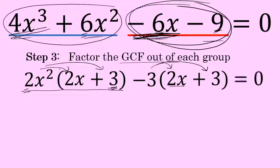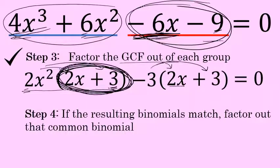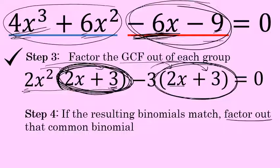Once we've set this equal to 0 and factored the greatest common factor out of each group, we're done with step 3. On to step 4, which is to see if the resulting binomials match. After you factor a common factor out of each group, take a look at the two binomials. The first one is 2x plus 3, and the second one is also 2x plus 3. When those binomials match, the factor-by-grouping method can be used. Not all third-degree equations can be solved this way, and you'll know if this method works when the two binomials match. In this case, they do match.